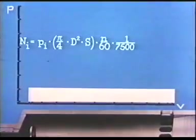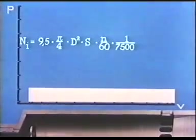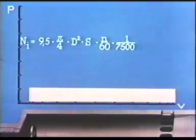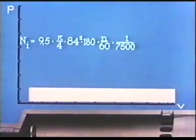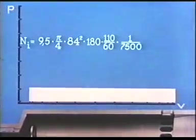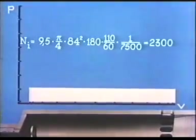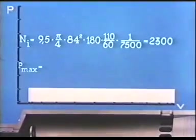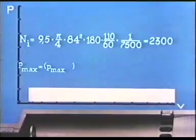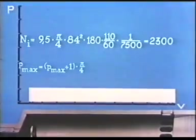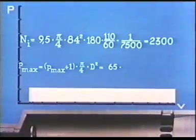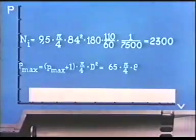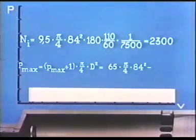To take an example, an engine with a PI of 9.5 kilograms per square centimeter, a piston diameter of 84 centimeters, a piston stroke of 180 centimeters, running at 110 revolutions per minute will have an indicated output of 2300 horsepower per cylinder. The largest force acting on the piston is the highest combustion pressure less the atmospheric pressure on the underside of the piston multiplied by the piston area, or 65 multiplied by PI over 4 multiplied by 84 squared. That is 360,000 kilograms.